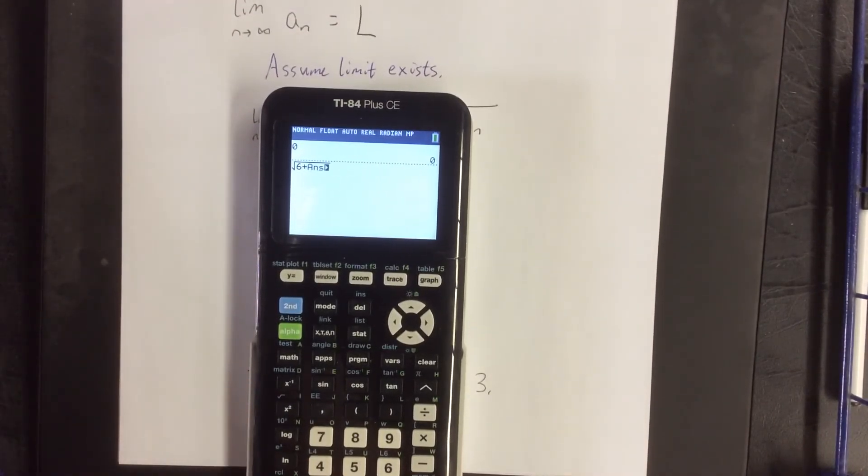So this will give you the square root of 6 plus the previous answer. So this will be the square root of 6 plus 0. This will be the square root of 6 plus the square root of 6 and so forth.